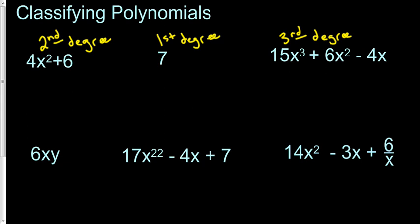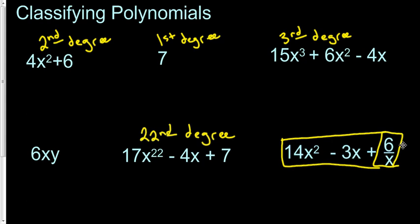Let's skip down to this one. This would be a 22nd degree, and this would be, hmm, this is odd. I've not seen that before. I know a bunch of people are saying this would be a second degree polynomial or quadratic polynomial. However, it is not a polynomial. Why? Because of this. We'll take a look at that on the next slide.